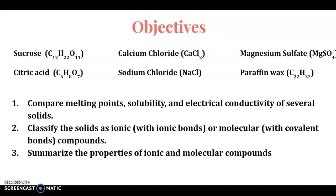We are going to classify the solids as ionic — those that have ionic bonds — or molecular — those that have covalent bonds. And then finally we are going to summarize the properties of ionic and molecular compounds.